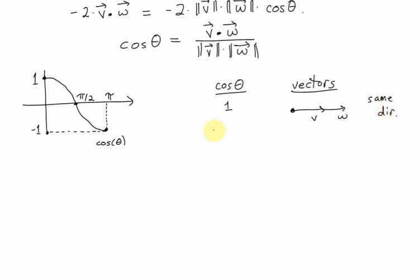If cosine of theta is a number between 0 and 1, a number in the interval from 0 to 1, that means the angle is between 0 and pi over 2. In other words, the angle is acute. Your vectors will look like I have pictured there.